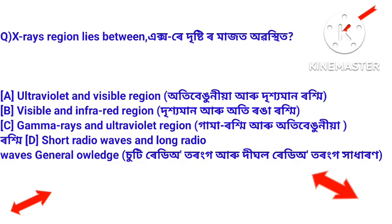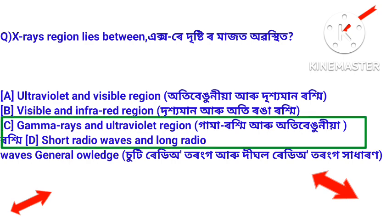Next question: X-ray region lies between — X-ray distilmajot abasthita. Answer: gamma rays and ultraviolet region — X-ray distilmajot gamma rays aru bengunyar rays and ultraviolet region.